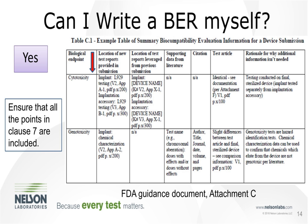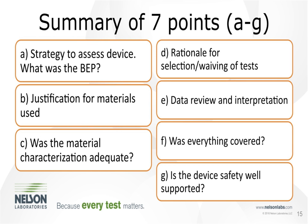Can you write a BER yourself? Yes, of course you can. The FDA guidance document Attachment C lists an example summary table for a biocompatibility evaluation, organized by biological endpoint. However, the ISO guidelines indicate they're looking for more than just biological endpoint information, so if you write your own BER, ensure all the points in Clause 7 are included. To summarize the seven required points: a strategy to assess the device, justification for materials used, adequacy of material characterization, rationale for selection or waiving of tests, data review and interpretation, identification of any gaps, and whether device safety is well supported.